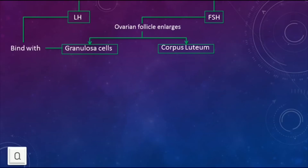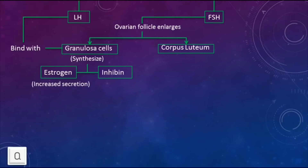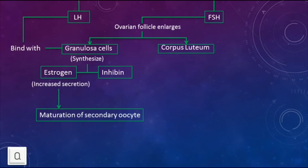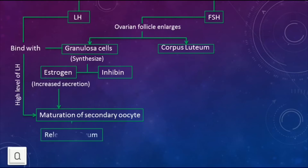Granulosa cells bind with LH and synthesize estrogen. Increased secretion of estrogen leads to maturation of the secondary oocyte, and a high level of LH results in the release of the ovum, or ovulation.